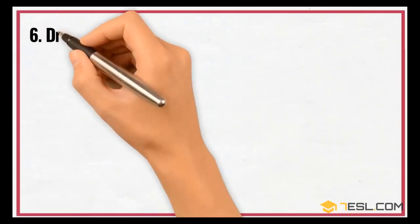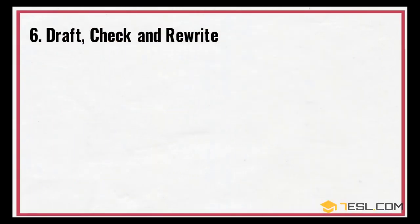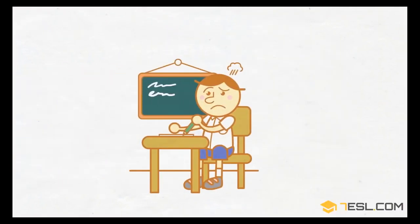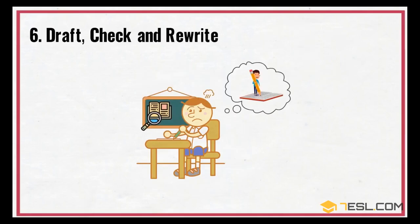6. Draft, check, and rewrite. It's not often that anything can be done perfectly the first time around, so checking your work once you have finished and rewriting parts of it can really improve your writing skills and allow you to add in and take away, leading to an excellent end result.